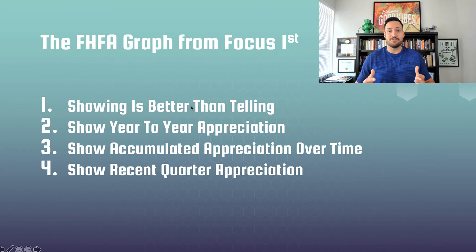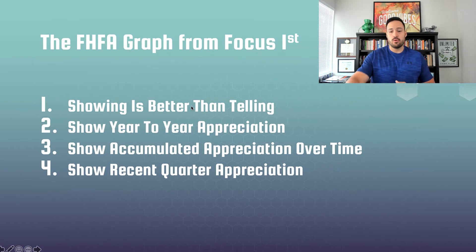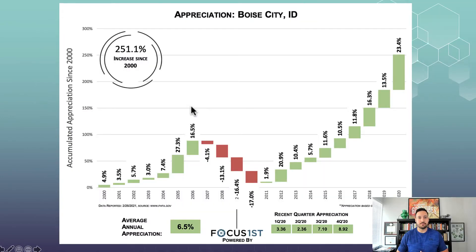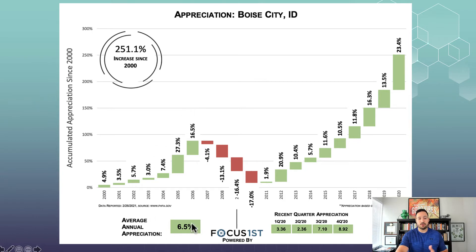Taking this information of resales and appraisals — in some cases just resales — we were able to create an awesome, beautiful graph. As you can see here for Boise City, Idaho, you can see very easily the appreciation year-by-year, as well as the effect of the accumulated appreciation over time. We have the average annual appreciation at the bottom, which in this case is 6.5%, as well as the recent quarter appreciation, so you can really see what the current and most up-to-date market is doing.